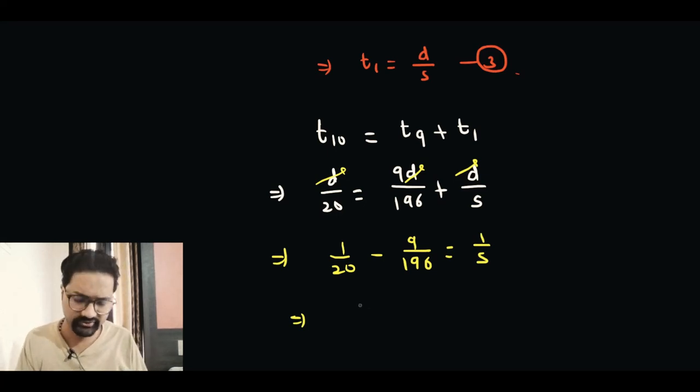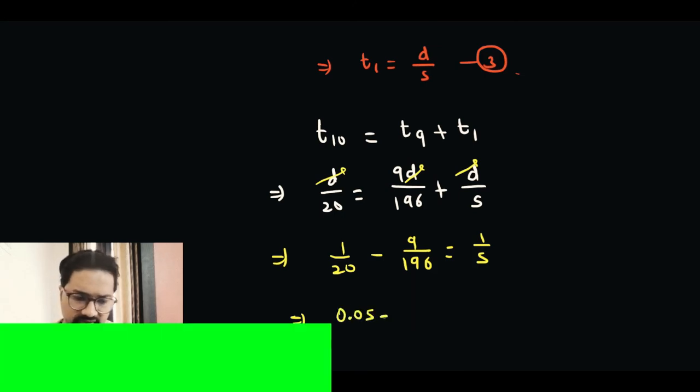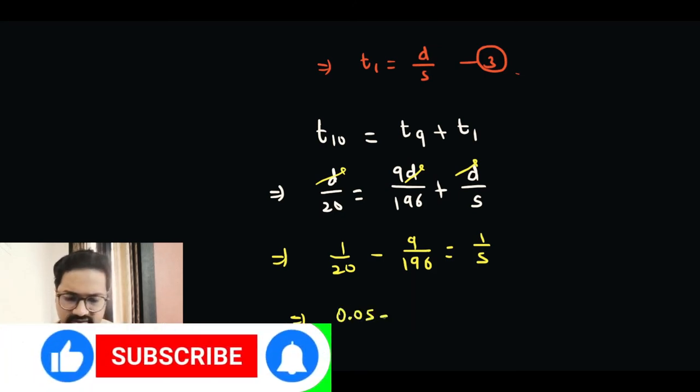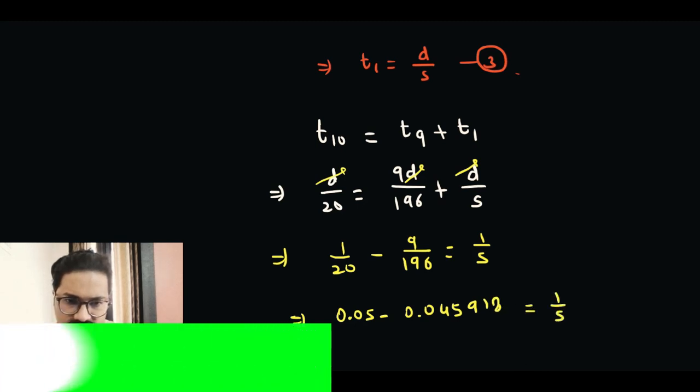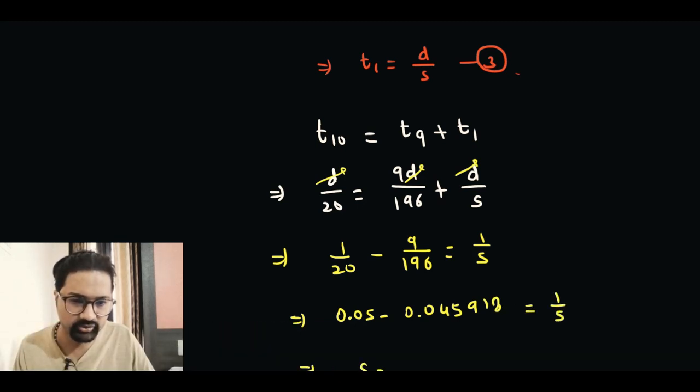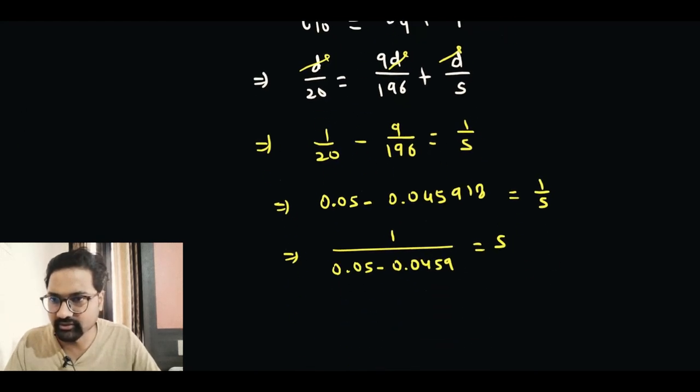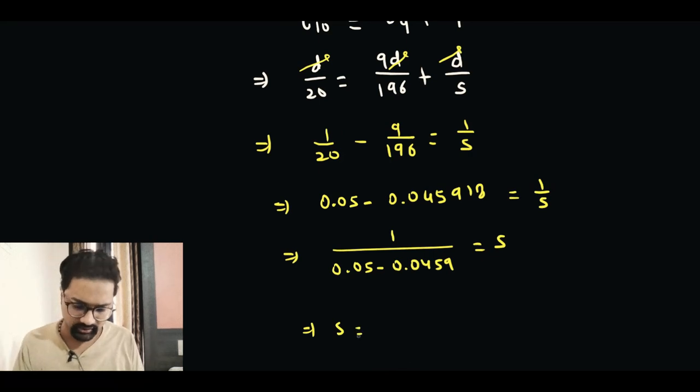I'm going to grab my calculator over here. It's 1 over 20, which is 0.05, and then we have 9 over 196, which is 0.0045918 and so on. It's 1 over S, and then we take the reciprocal of both sides, so 1 over 0.05 minus 0.0459 is equal to S.